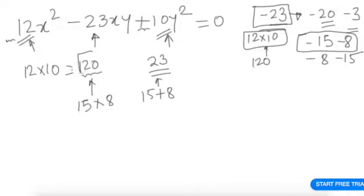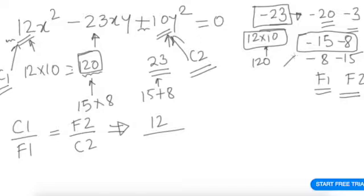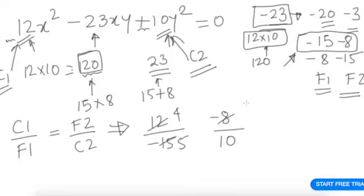Now checking with our Vedic logic: c1 = 12, c2 = 10, f1 = −15, f2 = −8. Is c1/f1 equal to f2/c2? That is 12/−15 versus −8/10. Simplifying: 3×4 = 12, 3×5 = 15, 2×4 = 8, 2×5 = 10. Yes, they are equal! The ratio is 4 to −5.